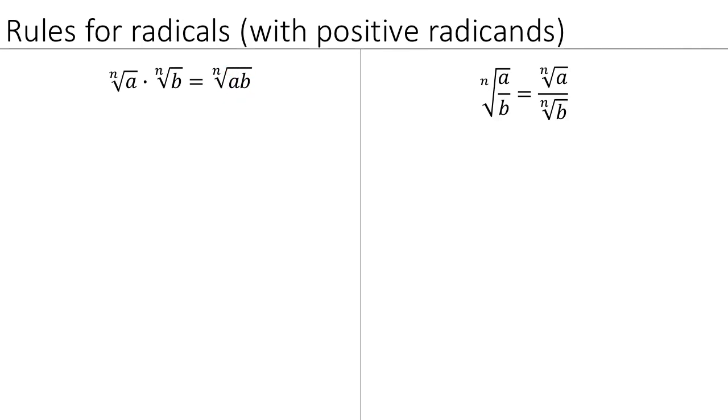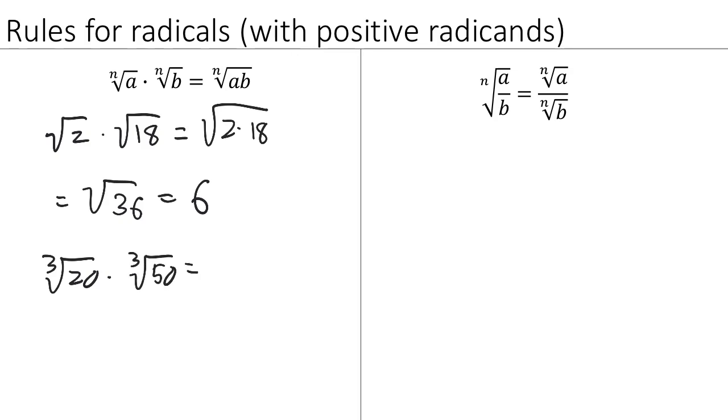So for example, suppose that we had the square root of 2, and we were going to multiply it by the square root of 18. This rule says that we can multiply the two radicands, 2 times 18, which gives us the square root of 36. And the square root of 36 is a nice number, it's just 6. Let's look at another example. Suppose we had the third root of 20, and we multiply that by the third root of 50. Again, the rule says that we can multiply the radicands, so this is the third root of 20 times 50, which is the third root of 1,000, which is 10.